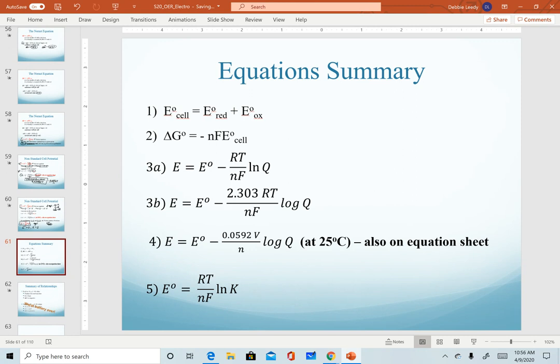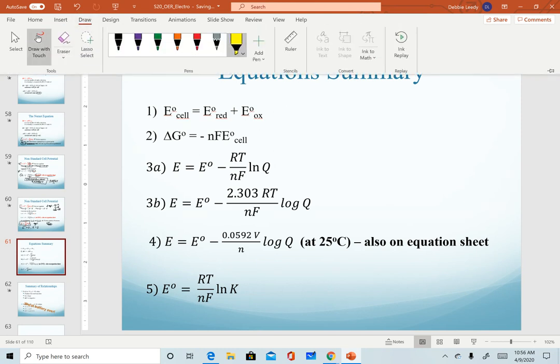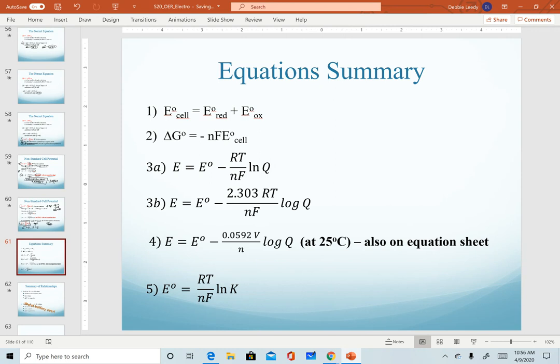The last two slides that I want to show here—this one, first of all, is new. This slide is not in your slides that I posted online. I just made it up so that you have it for reference. What I want to focus on in this slide is identifying what is and is not on your equation sheet. So remember, we used equation number one to calculate our standard cell potential. We just derived equation number two. This is on your equation sheet. Equations 3a and 3b are labeled as such because they are the same equation, just different forms from the ln versus the log base 10. So 3a is on your equation sheet. 3b is not.